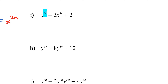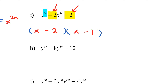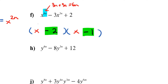Letter F has the same kind of problem with a new exponent. I need two numbers that multiply to 2 and combine to negative 3: that's negative 2 and negative 1, since (−2)(−1) = 2 and −2 + (−1) = −3. To finish, I need x to the 6n, and since 3n plus 3n equals 6n, I need 3n in each bracket.